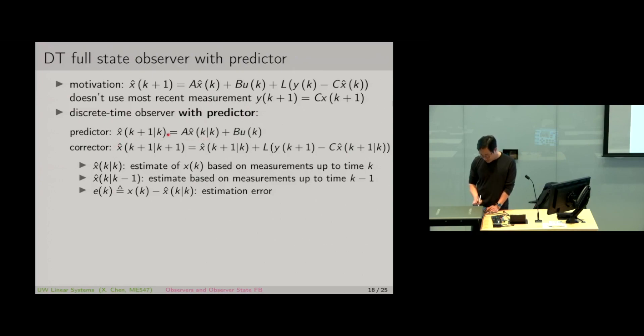We still do a prediction step which is essentially using a copy of the system state equation. We use everything we have at K and we do an estimate of X hat at K+1. So the notation is as follows: X hat(K|K) means the estimate of X(K) based on everything I can have up to time K. And X hat(K|K-1) is the estimate based on measurements up to the previous time K-1.